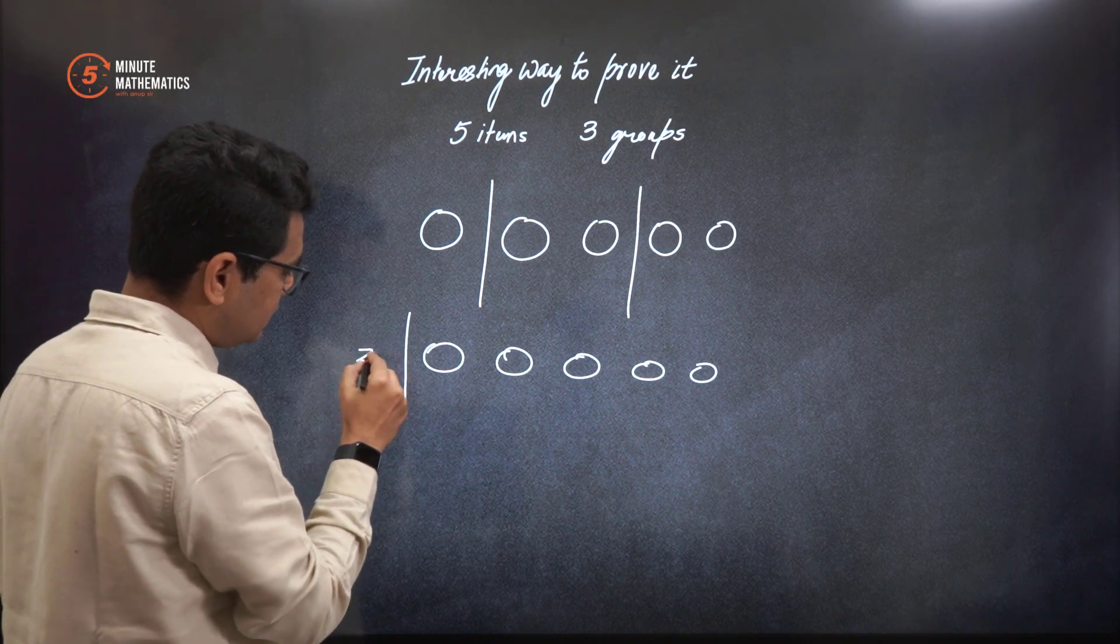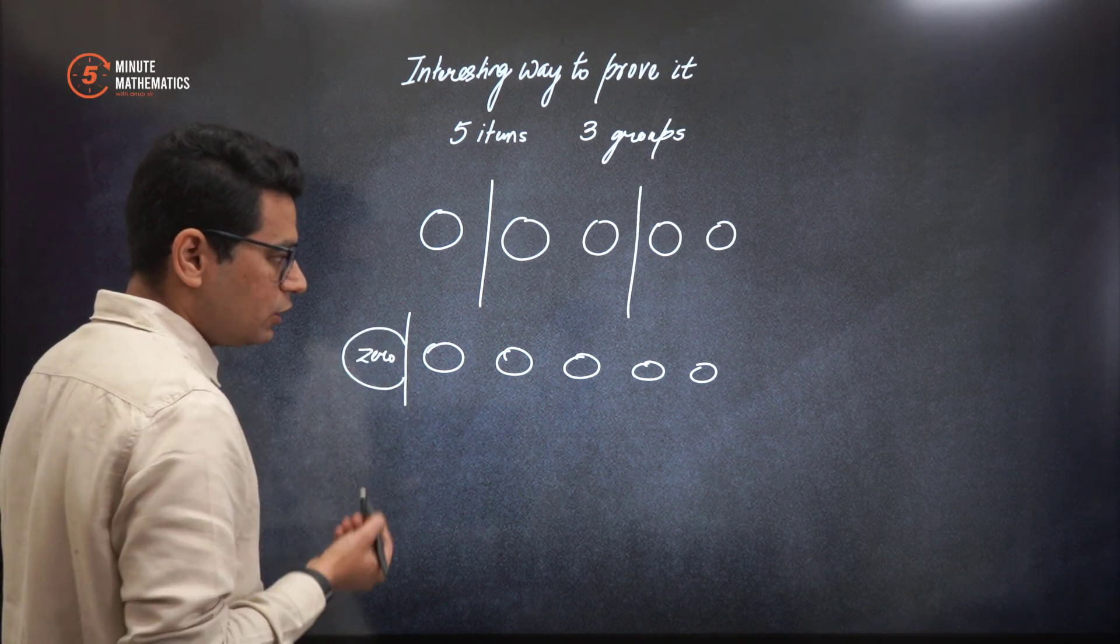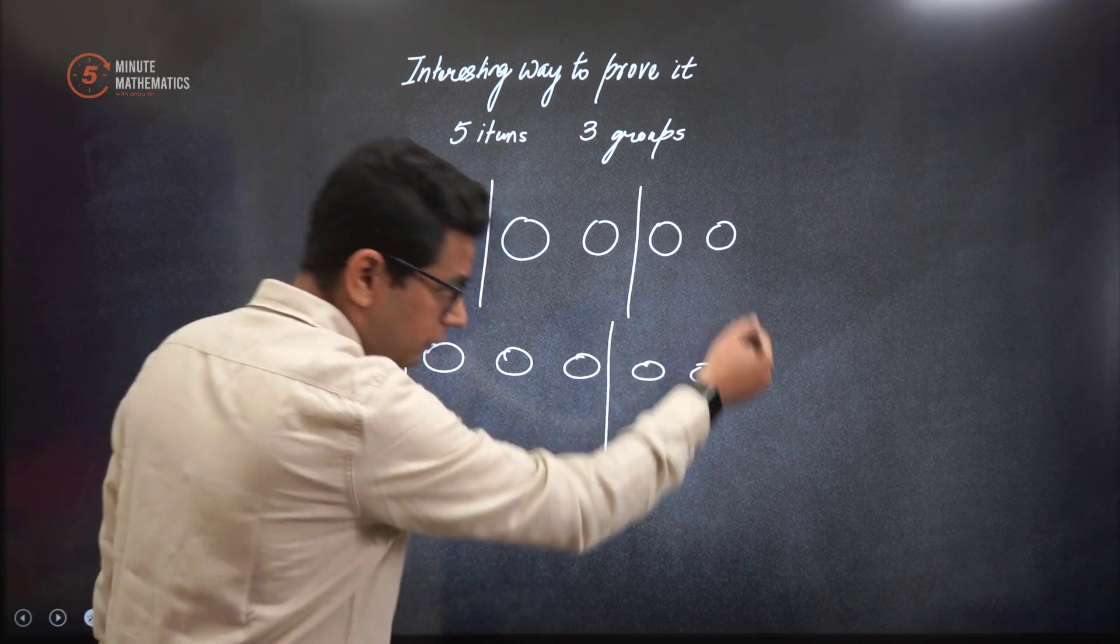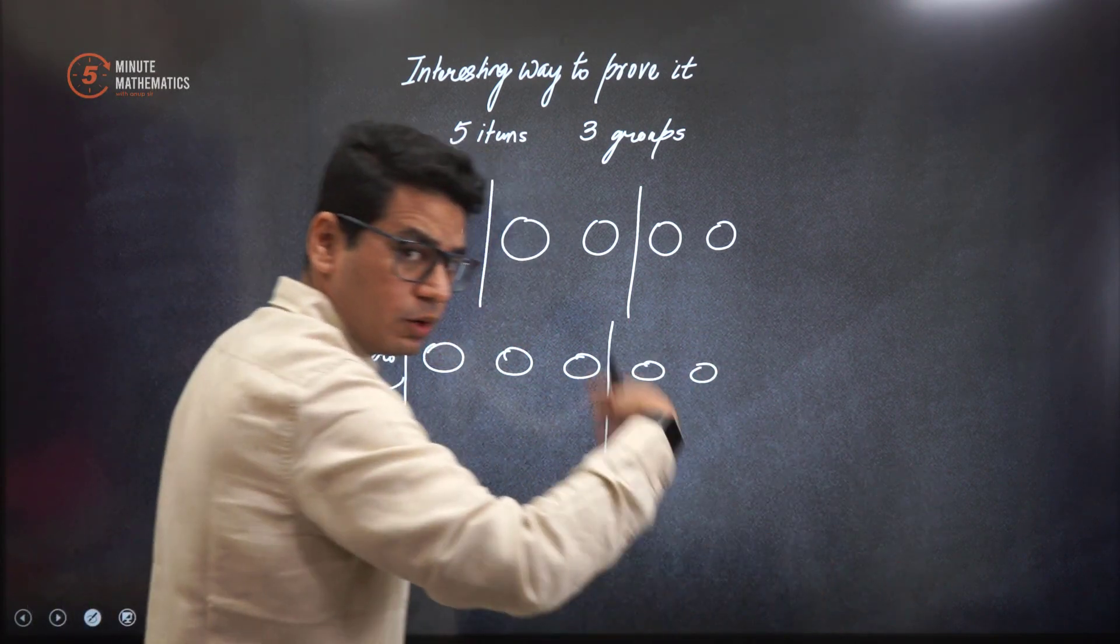I could have drawn here, I could have drawn here. That means all 5 to 1 and remaining get 0. Understood? So PNC kaise bana isme?